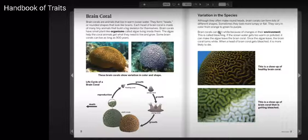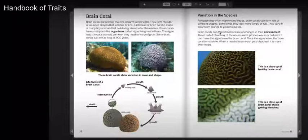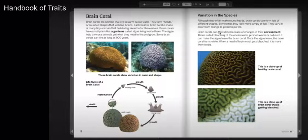Brain corals can turn white because of changes in their environment. This is called bleaching. If the ocean water gets too warm or polluted, it can make the algae leave the brain coral. Once the algae leave, the brain coral turns white. When a head of brain coral gets bleached, it is more likely to die.